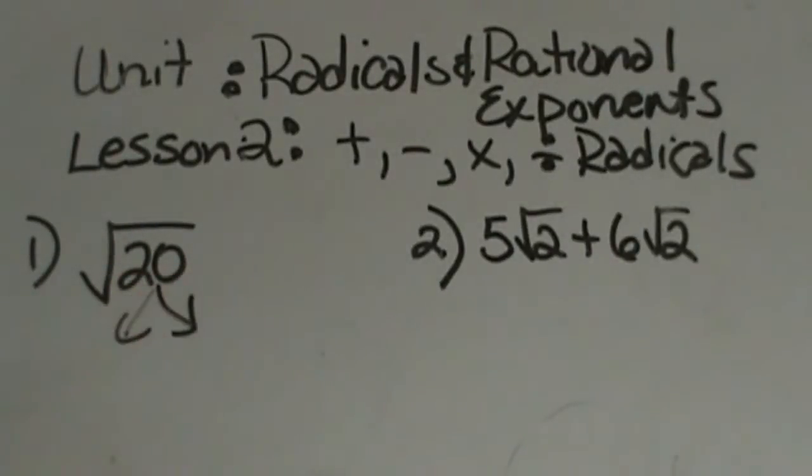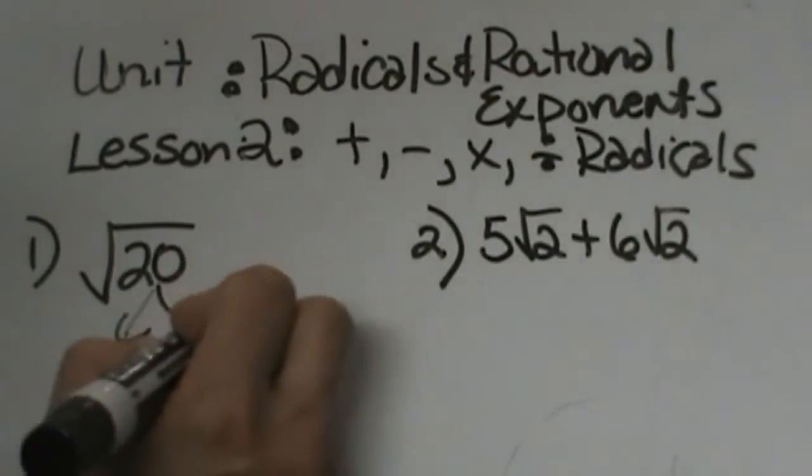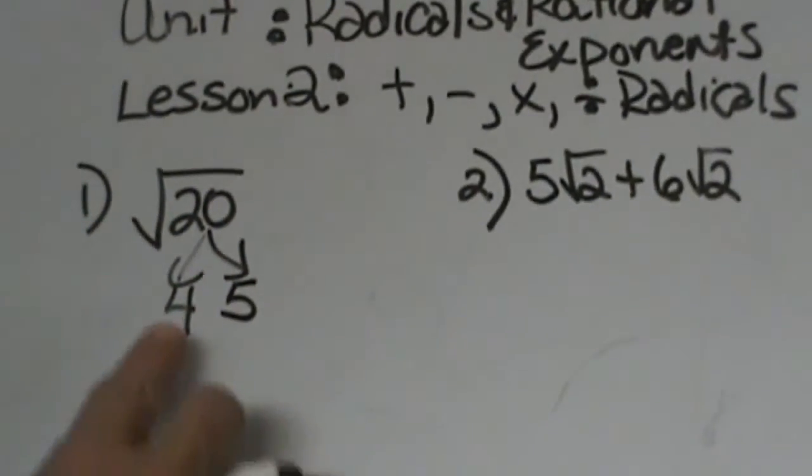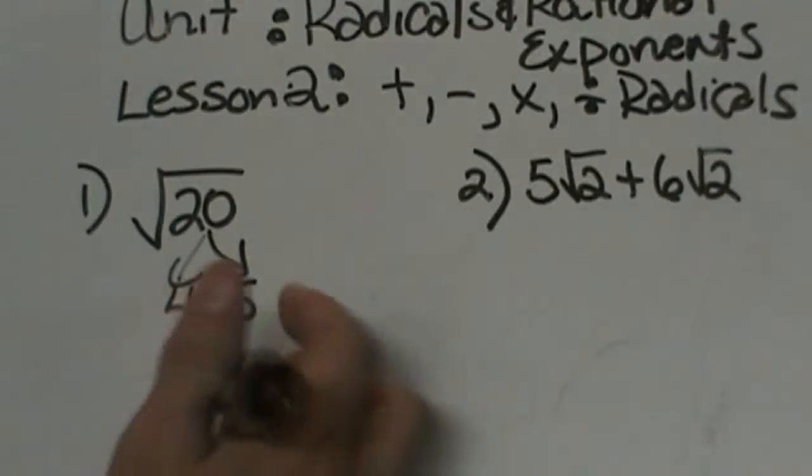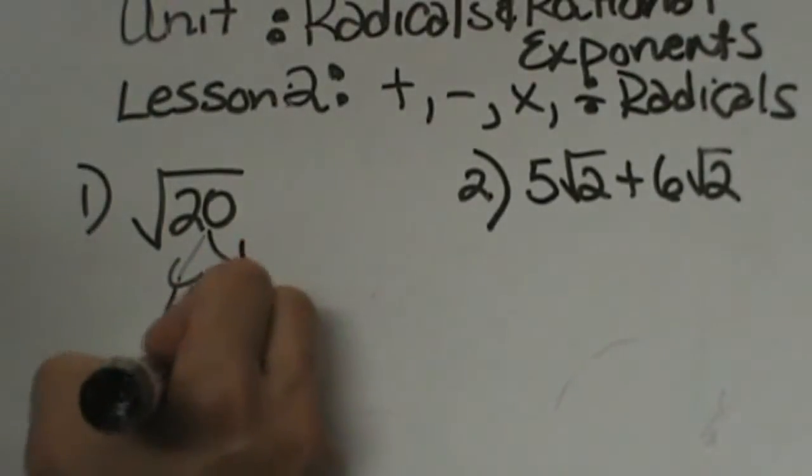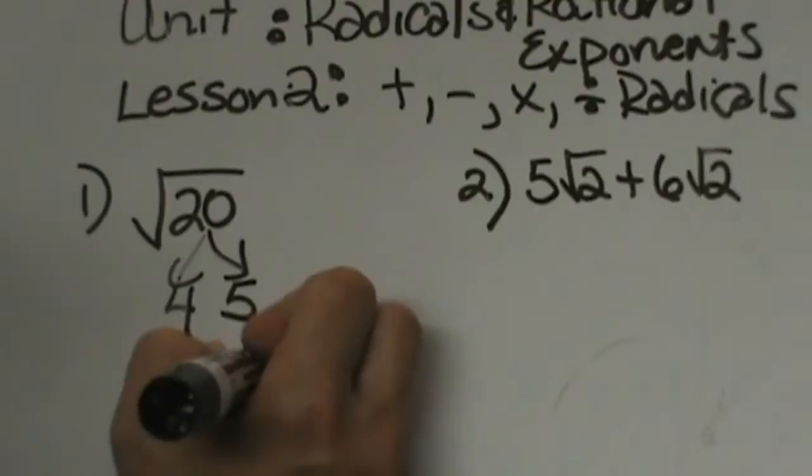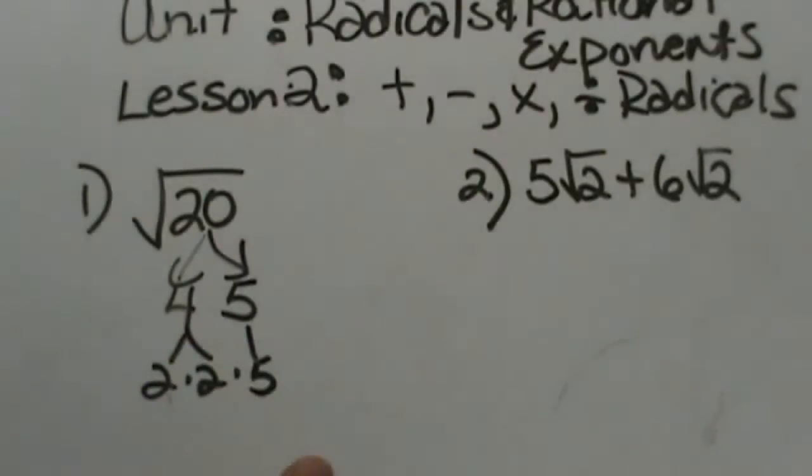We know that we're looking for perfect squares that are factors of 20. I'm going to start factoring 20 into a factor tree. I take 4 times 5 and then 2 times 2 times 2. You want to get down to these prime factors.